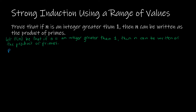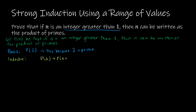Then we're going to use our basis step for the lowest value. Notice it says an integer greater than 1, so our basis step will not be p of 1, but p of 2. And p of 2 is true because 2 is prime — obviously if 2 is prime, it can be written as a product of primes, which is just 2. For the inductive step, instead of saying p of k implies p of k plus 1, we're saying p of j, where j is all of the integers from 1 to k, implies p of k plus 1.